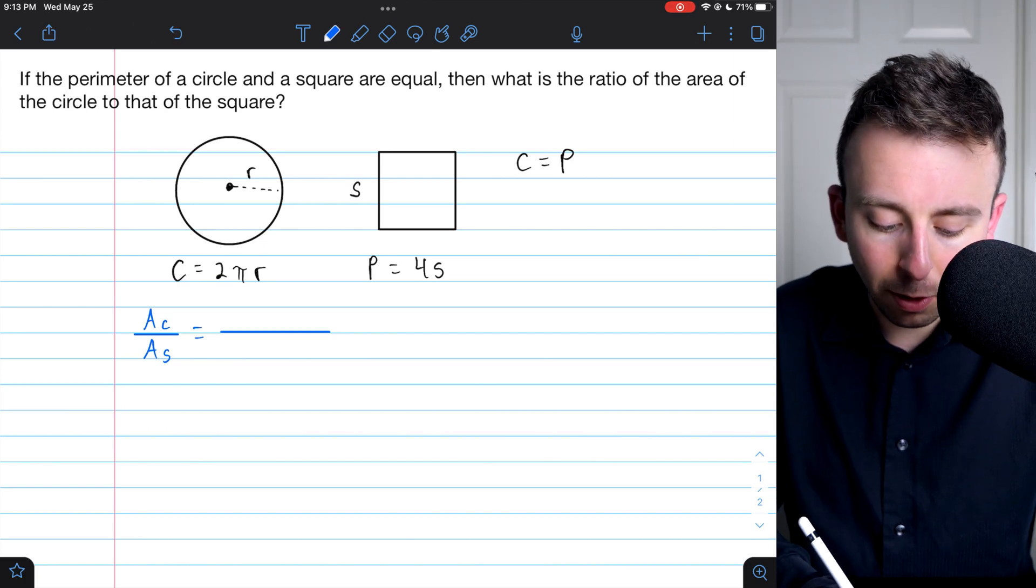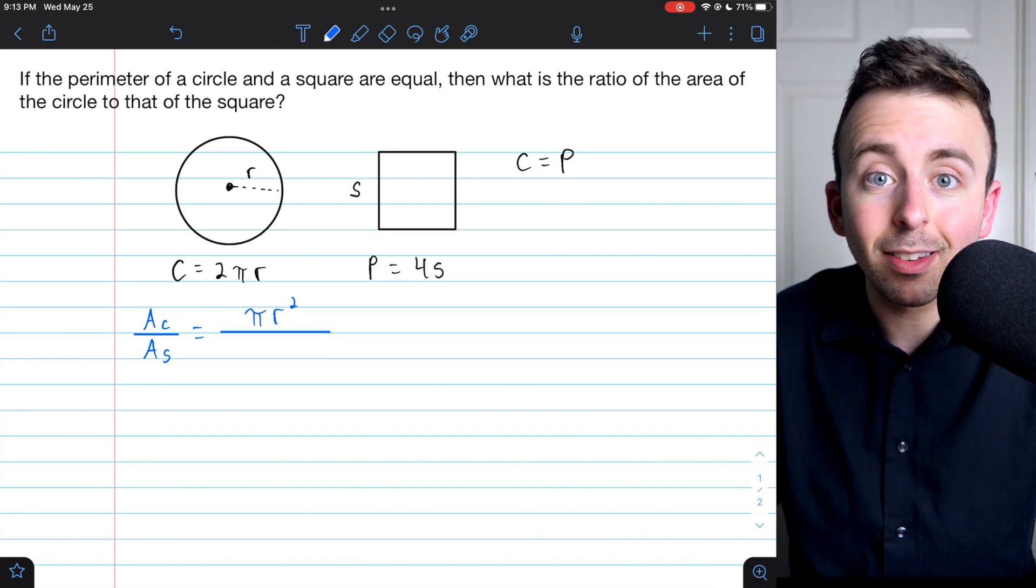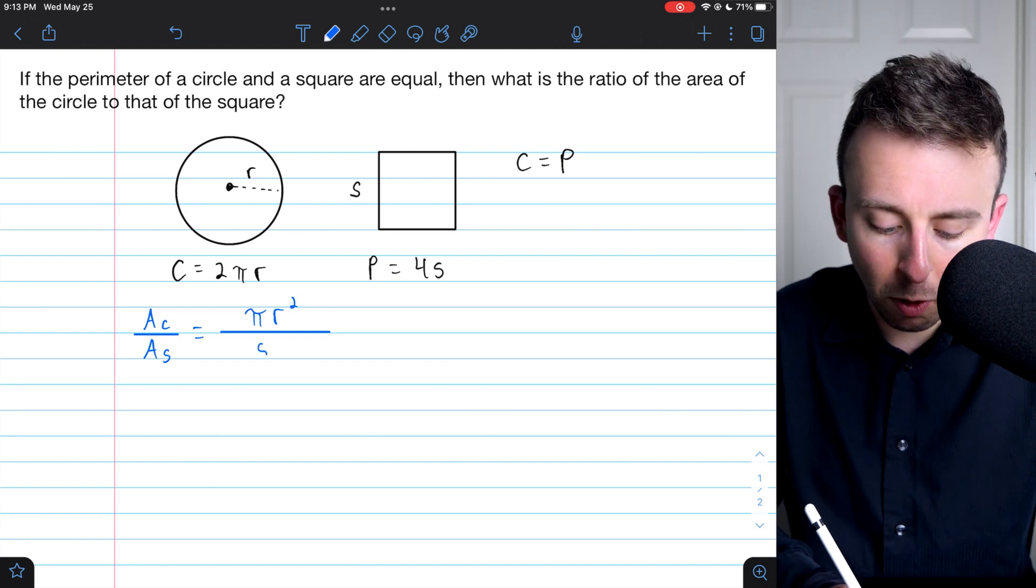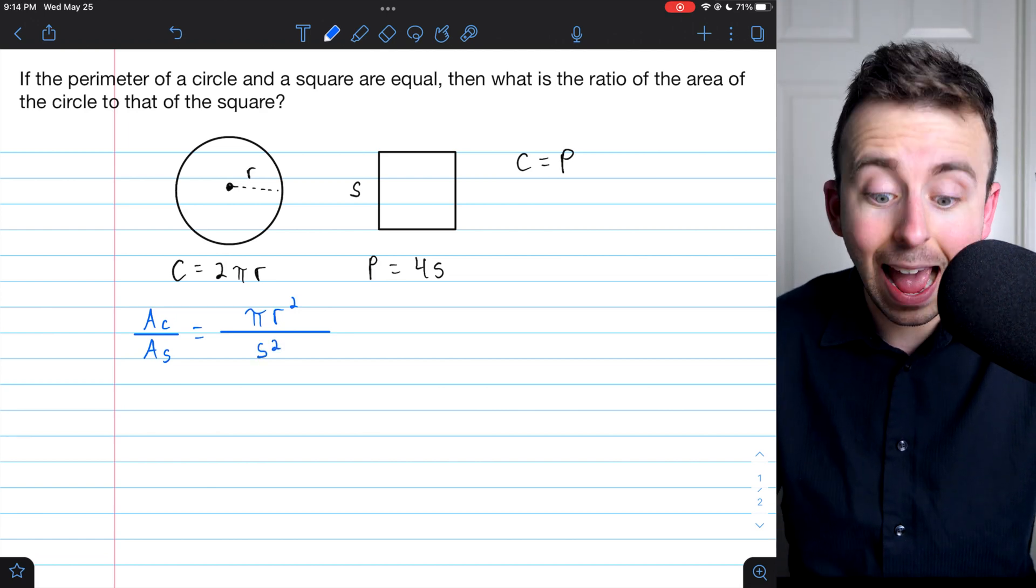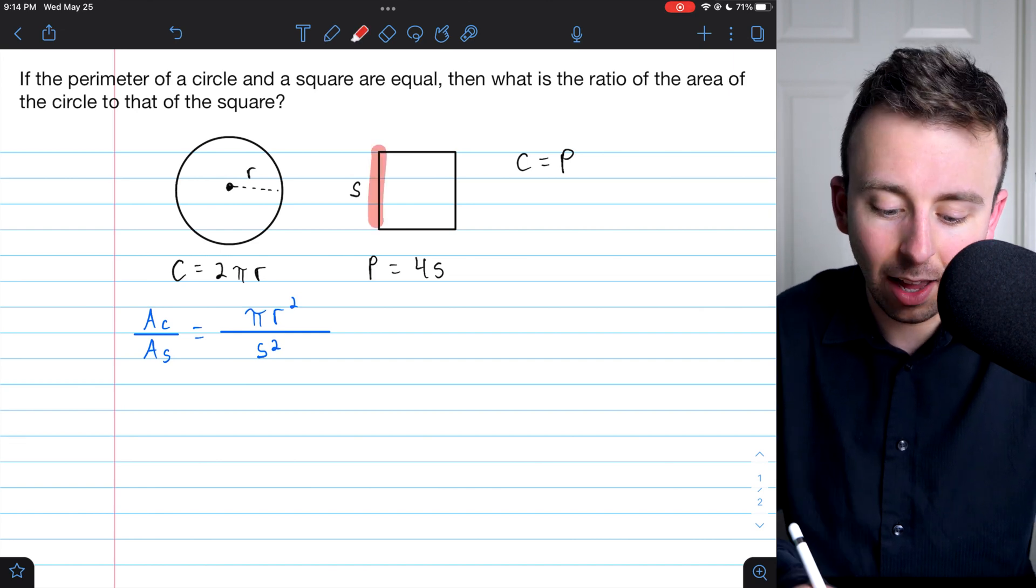The area of the circle, you might remember the area formula for circles, it's π times the radius squared. The area for the square, I'm sure you know that one, is just s squared, where s, of course, is the side length of the square.